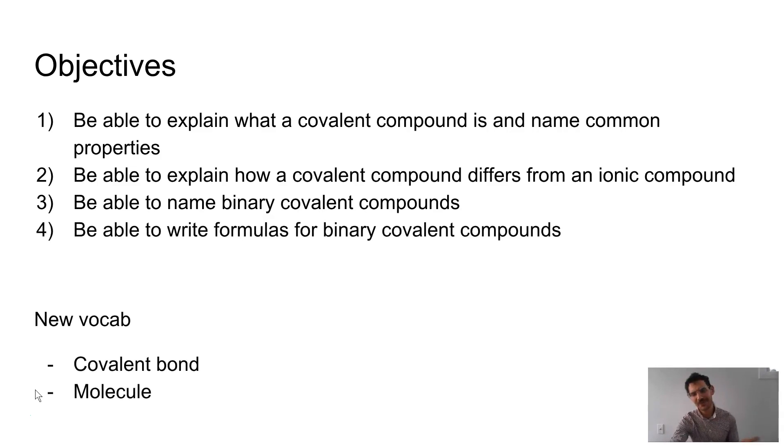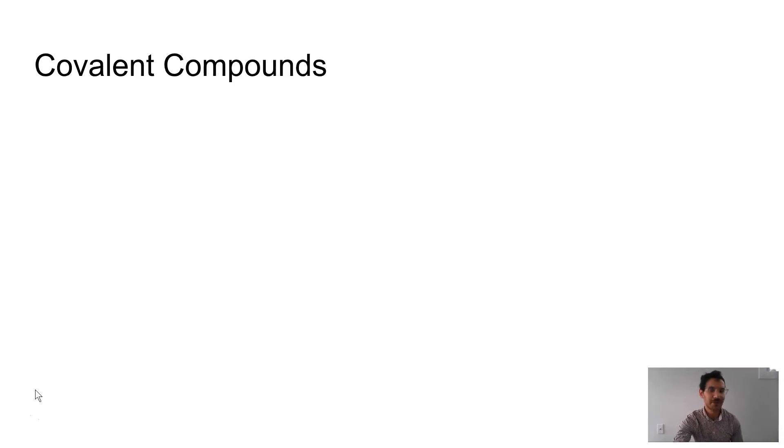We got some new vocabulary, covalent bond, which we talked about, molecule, we talked about. Those are not new. So we have covalent compounds. As we know, covalent compounds are composed of two or more nonmetals, and actually in some instances just one, like hydrogen, which is two hydrogen atoms covalently bonded together.